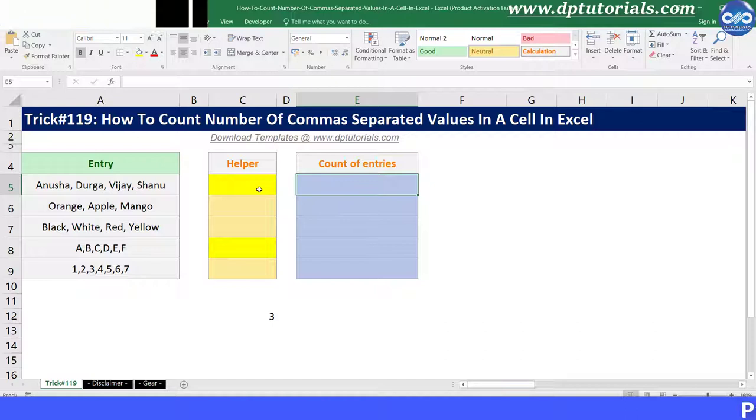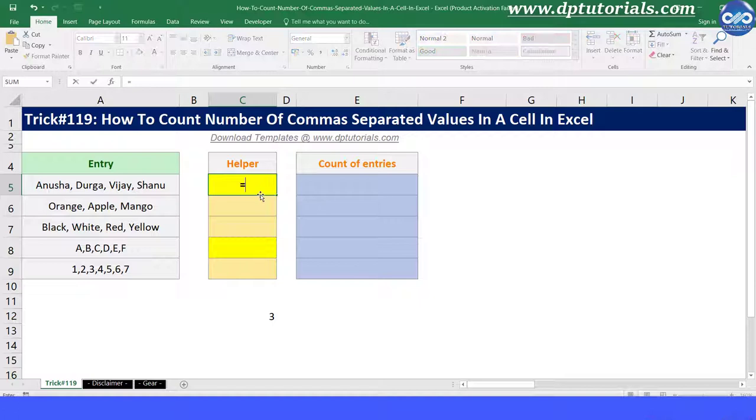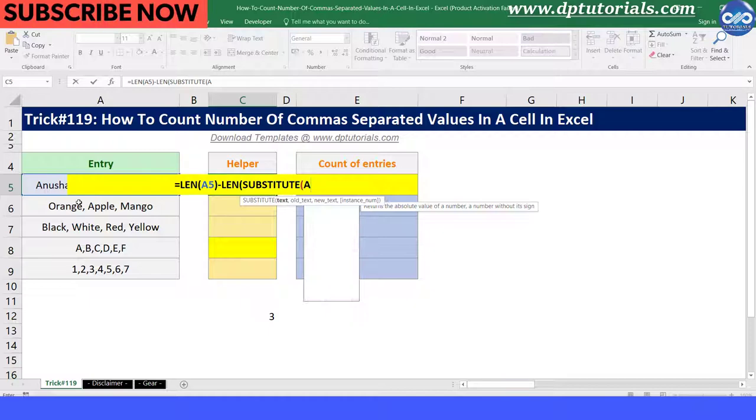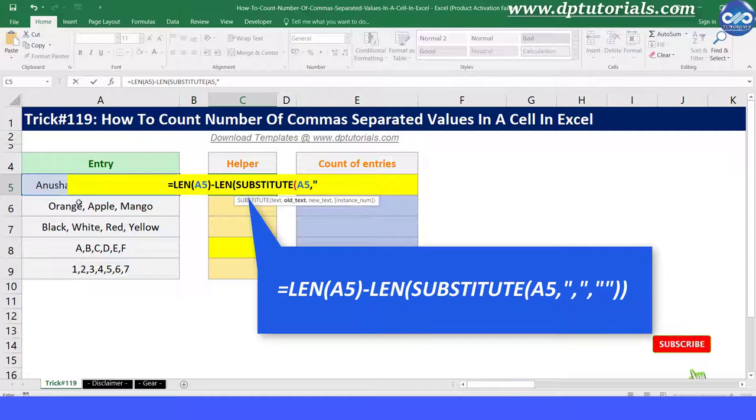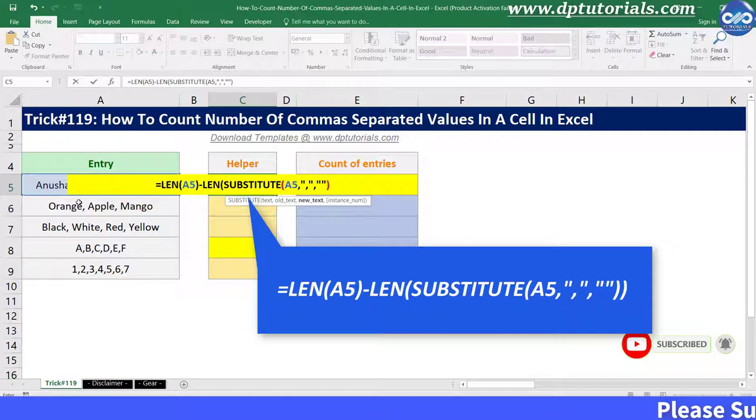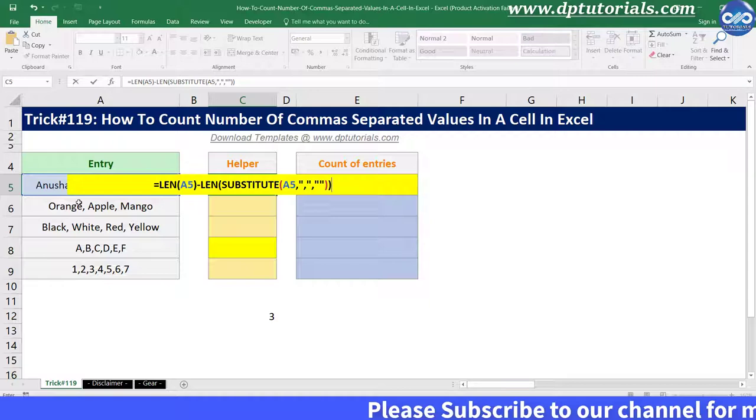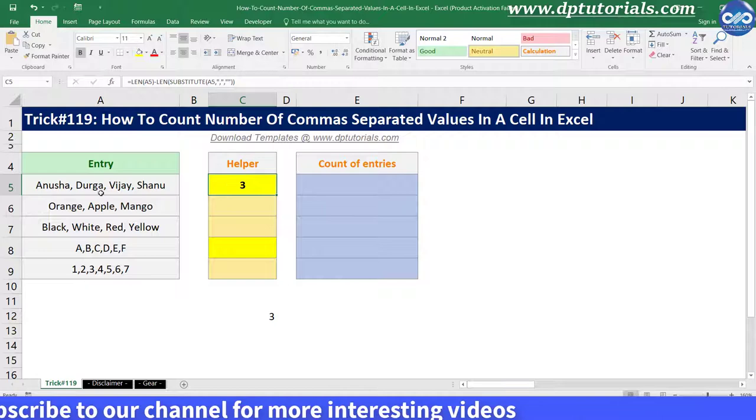In cell C5, I type the formula as equals to LEN open the bracket select the cell A5 close the bracket minus LEN open the bracket SUBSTITUTE open the bracket A5 comma give inverted commas and a comma inside comma and inverted quotes close the bracket for the substitute and again close it for the LEN function and press enter to see the result as 3 as we have got 3 commas in the cell A5.